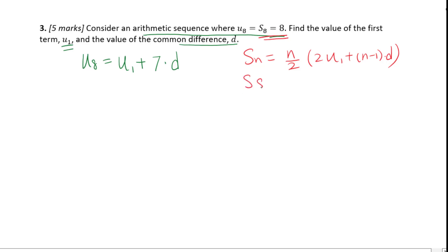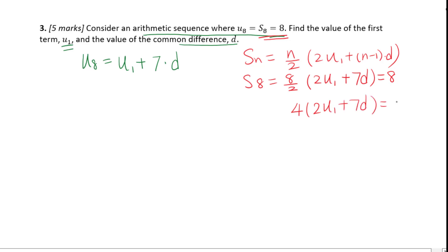So S8 equals 8 over 2 times (2U1 plus 7d), that equals 8. 8 over 2 is 4, so 4 times (2U1 plus 7d) equals 8. Dividing both sides by 4, we get 2U1 plus 7d equals 2.